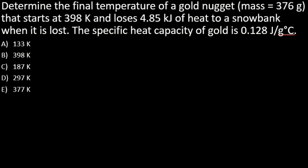Determine the final temperature of a gold nugget (mass = 376 grams) that starts at 398 Kelvin and loses 4.85 kilojoules of heat when it is lost. The specific heat capacity of gold is 0.128 J/g°C.